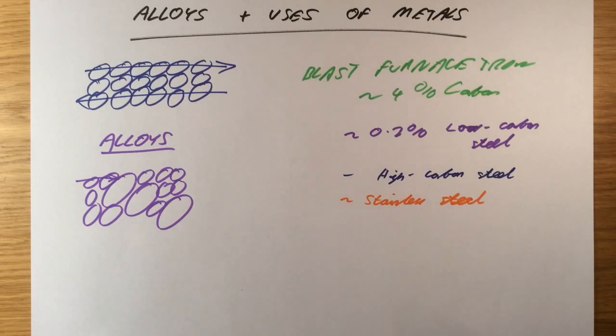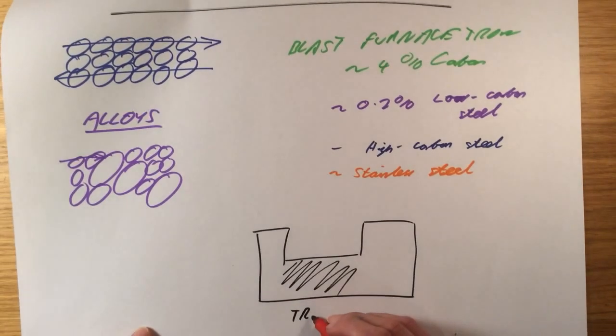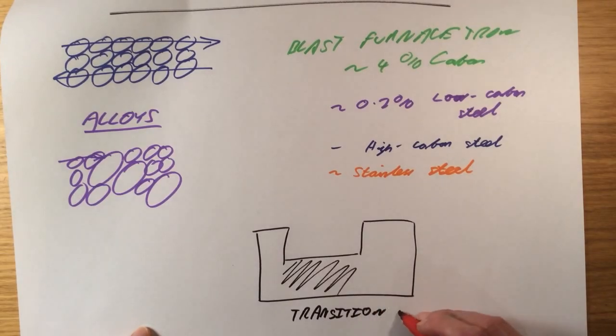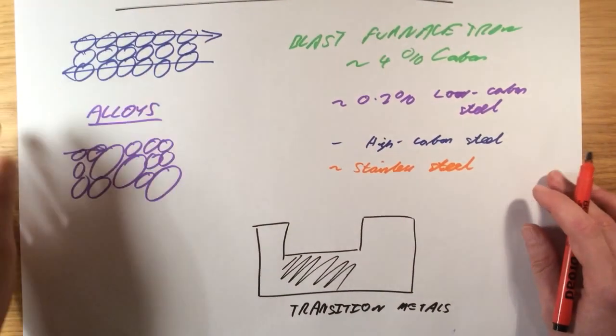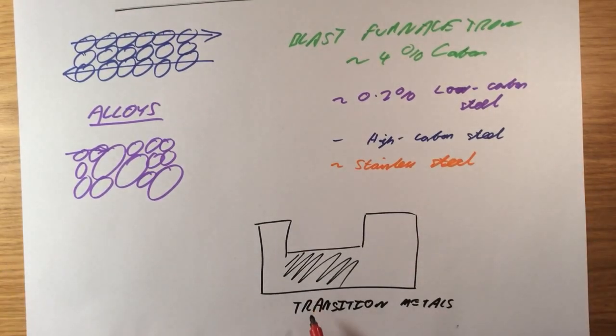A large number of the metals we use on a day-to-day basis come from the part of the periodic table which is right in the middle. So this central section here, which are known as the transition metals. So this includes things like gold, things like titanium, things like copper. But even with these metals, we generally need to alloy them to make them useful.